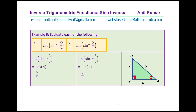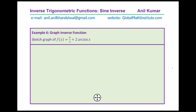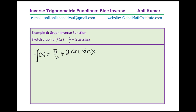Feel free to share your views and write your comments as we go forward. We have 8 questions to answer and now we are gearing up for slightly more difficult questions. Question 6 is to graph the inverse function — sketch the graph of f(x) equals pi by 2 plus 2 times arc sine x.